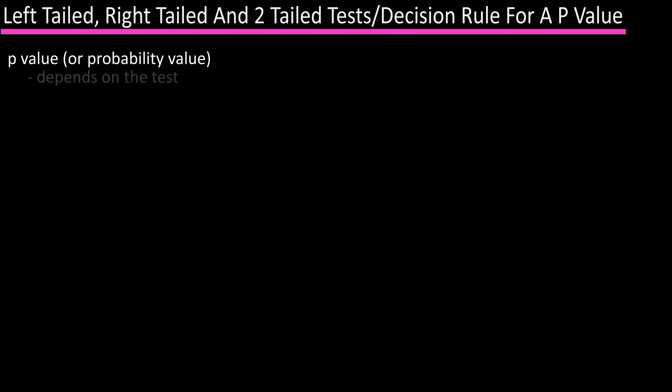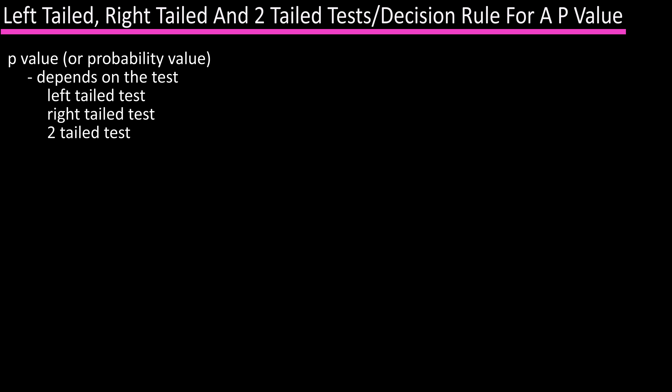The p-value depends on the test, and there are three hypothesis tests: a left-tailed test, a right-tailed test, and a two-tailed test.